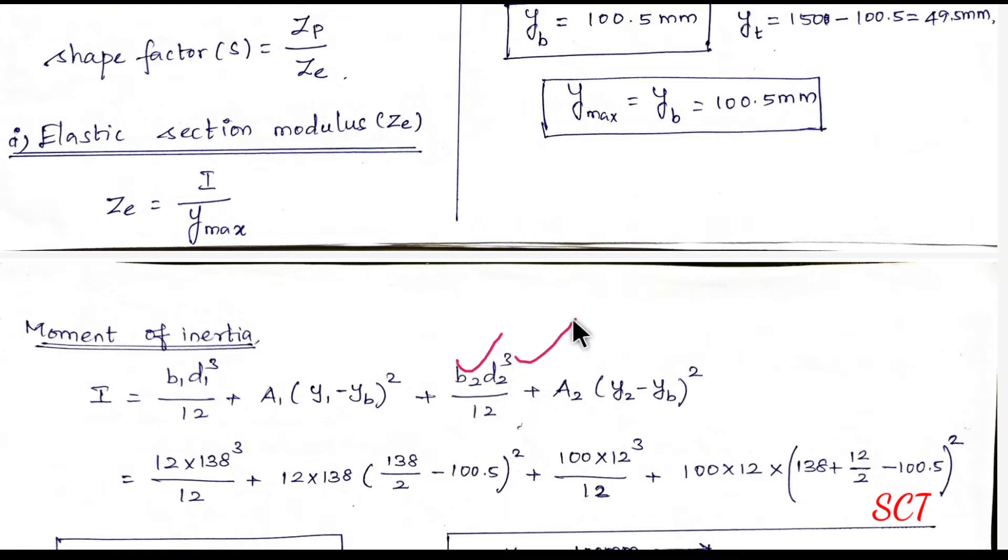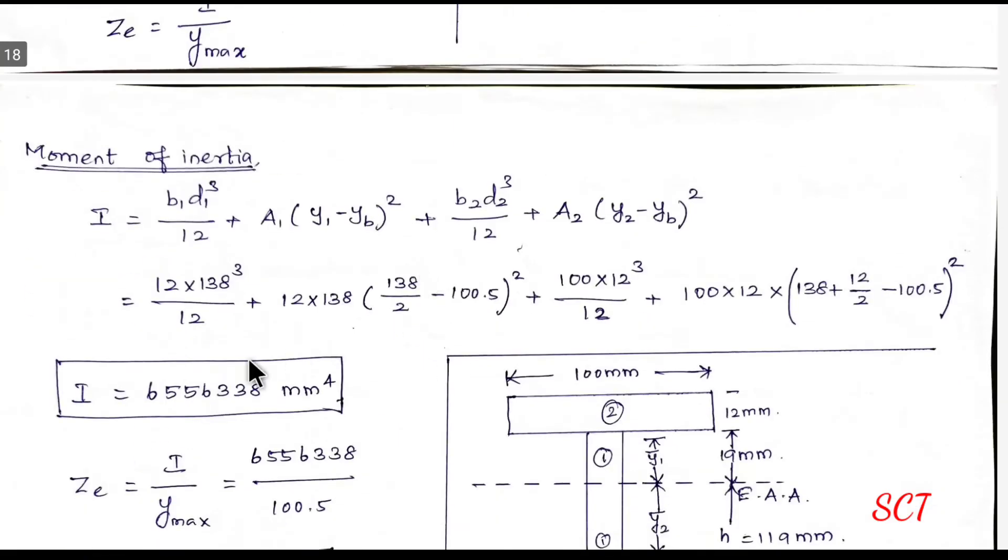Next, b2, d2, cube divided by 12. b2, value 100, d2, value 12. Next, area 2, substitute y2, substitute yb, substitute. Substitute it, we can solve the moment of inertia i is equal to 6556338 mm power 4.